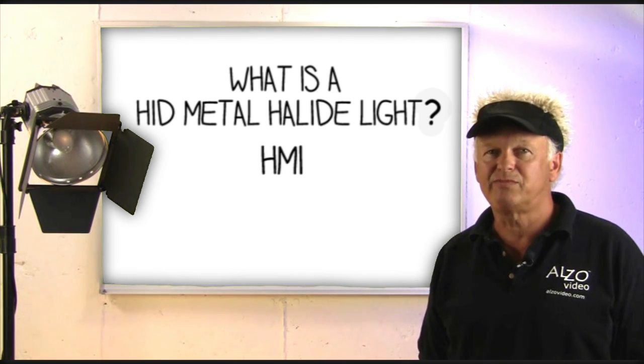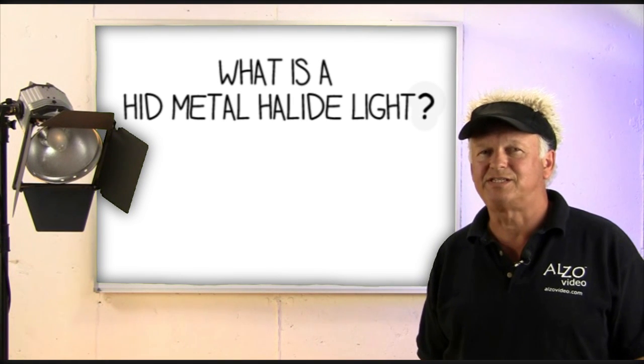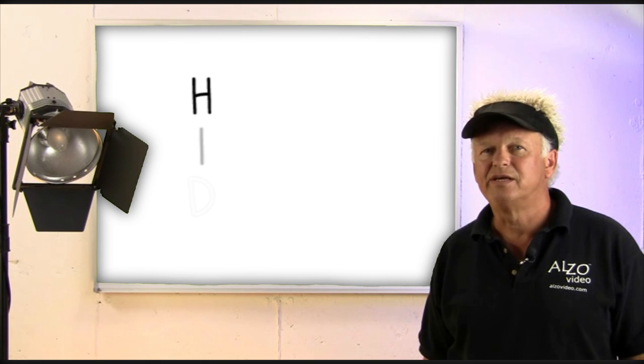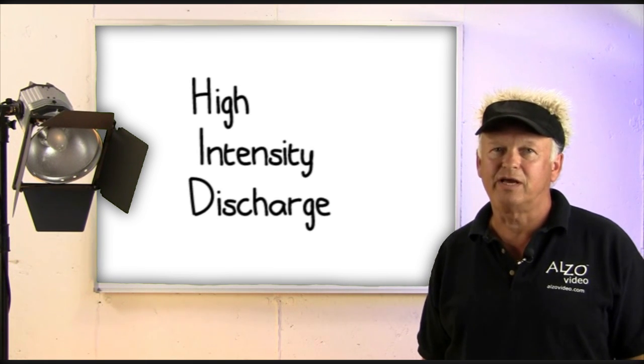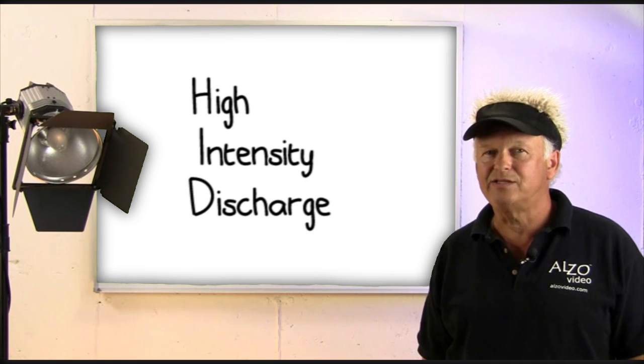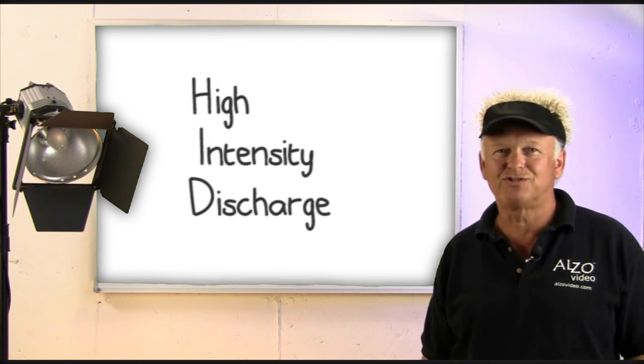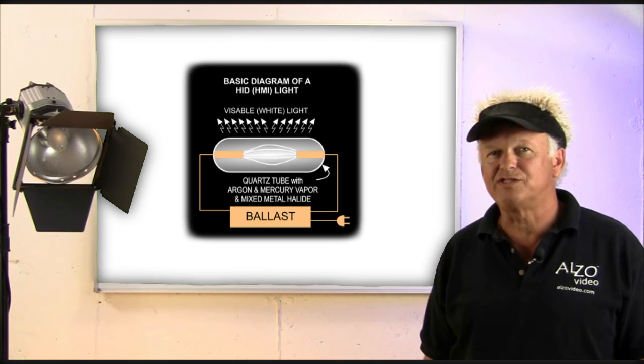But now that's changed. There are very affordable HID HMI lights from Alzo Video. So what is an HID metal halide light? First of all, HID stands for high intensity discharge, or in other words, an arc lamp. And metal halides are metal salts.